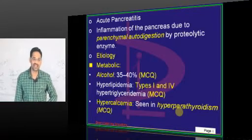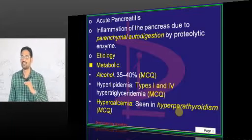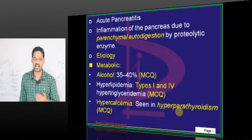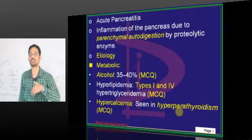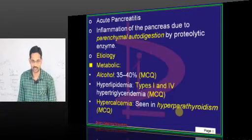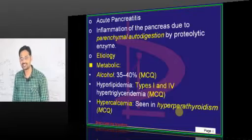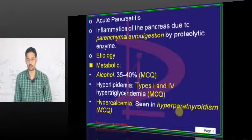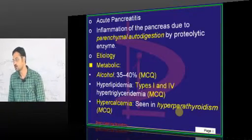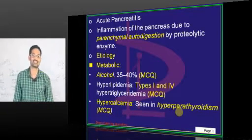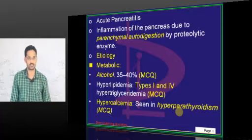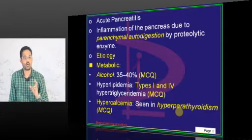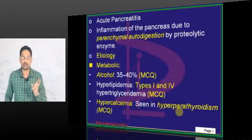What happens in pancreatitis is that this enzyme activation occurs prematurely within the pancreas. Why does this occur prematurely? Because of the concept of co-localization.